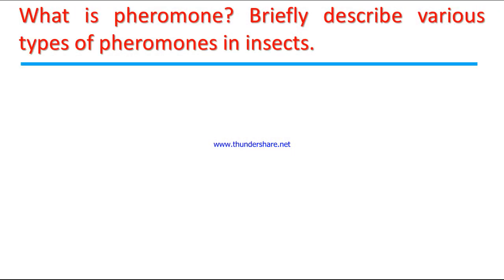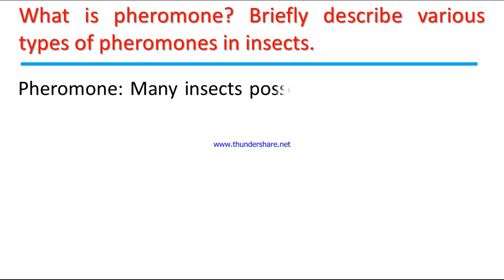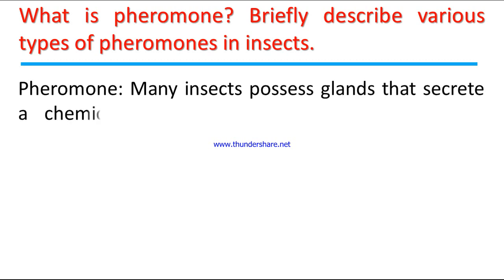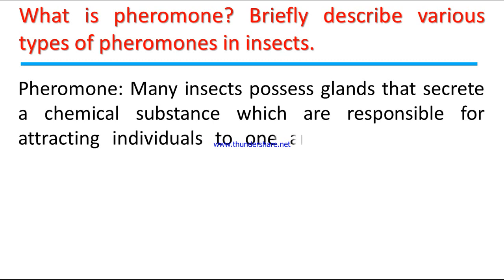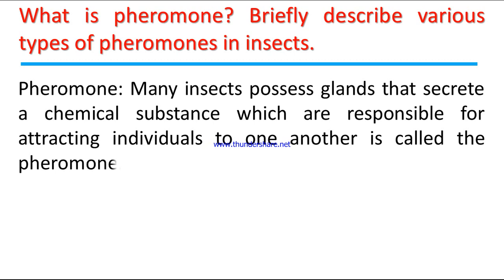A very important question for this discussion is: what is a pheromone? Briefly describe the various types of pheromones in insects. Answer: Many insects possess glands that secrete a chemical substance which is responsible for attracting individuals to one another — this is called a pheromone.